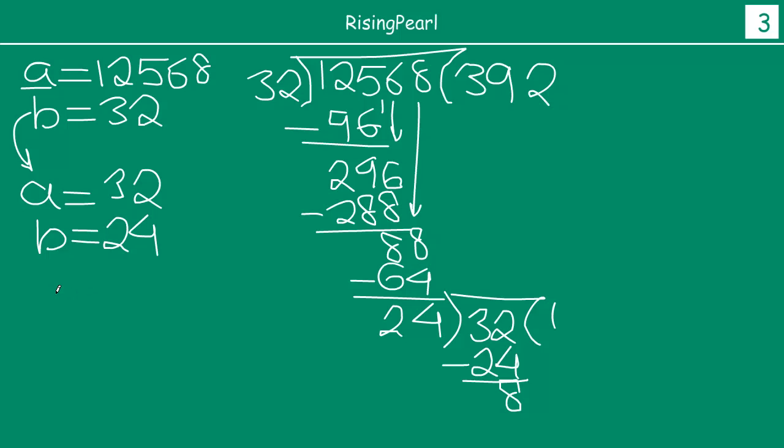So now we are going to apply Euclid's division lemma again and now my a and b values will change. At this point my remainder will be my b and old divisor will be a. So here I'm going to write it this way: 24 divided by 8 equals 3 with remainder 0. So at this point my r becomes 0, that means we have an HCF. So what is my divisor at this point? That is 8.